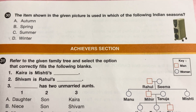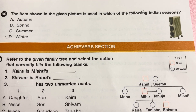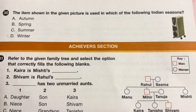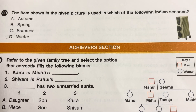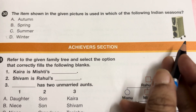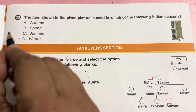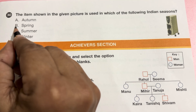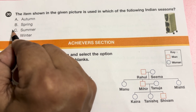The item shown in the given picture is used in which of the following Indian seasons? This is an air cooler. We use it in summer season. Answer is C, summer.